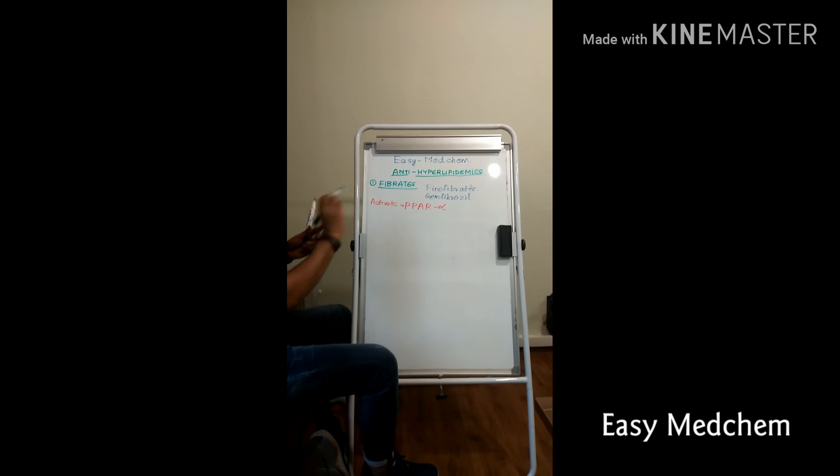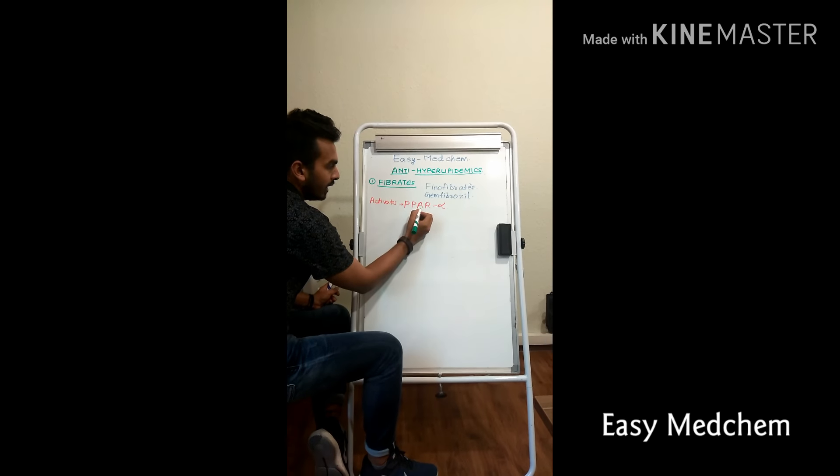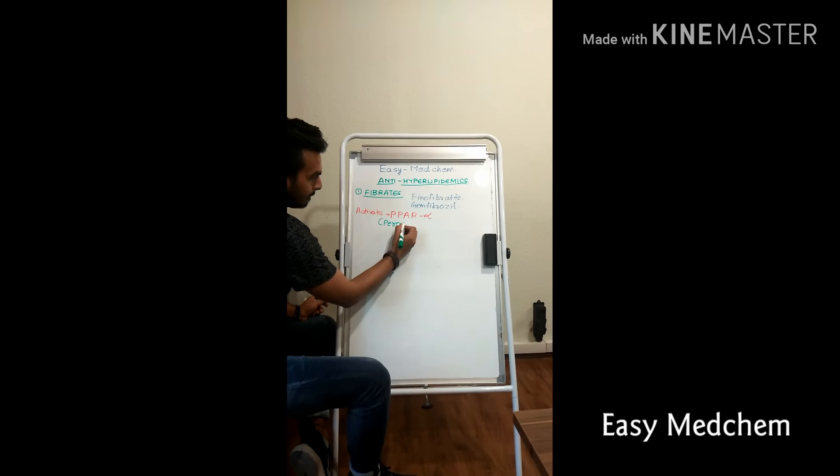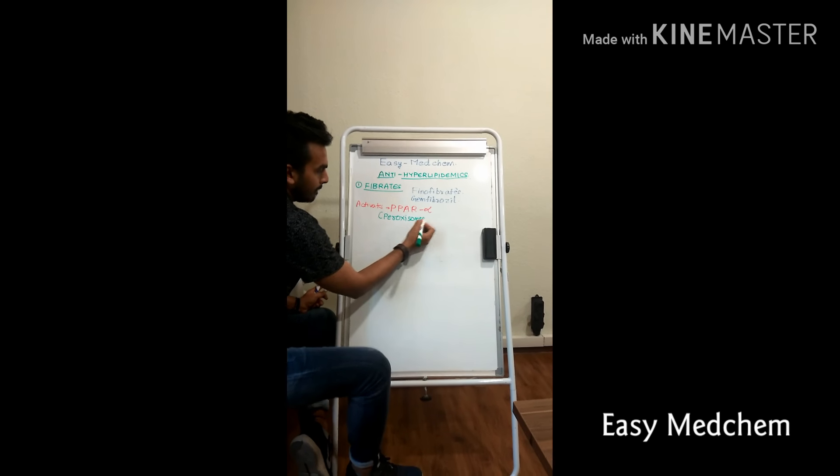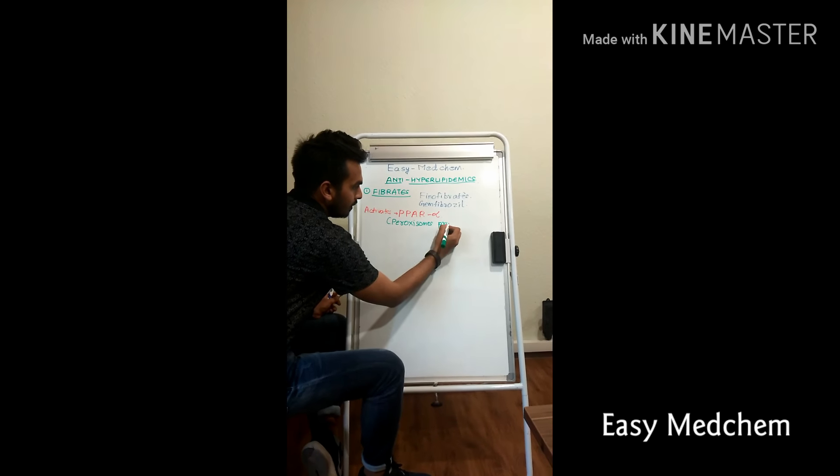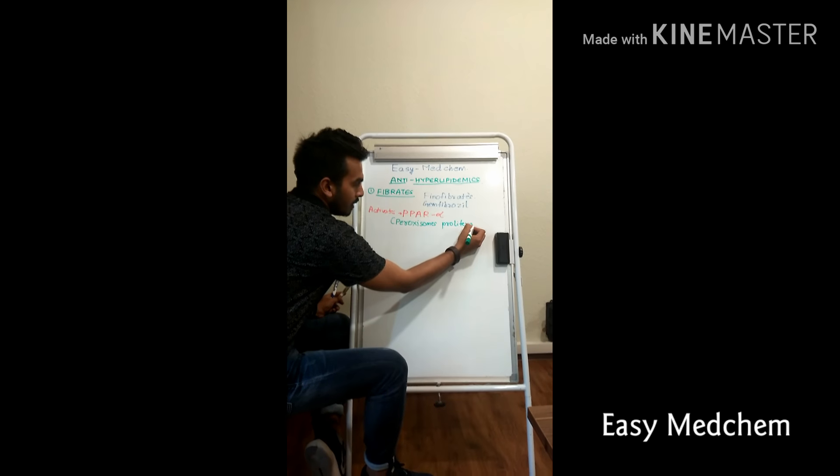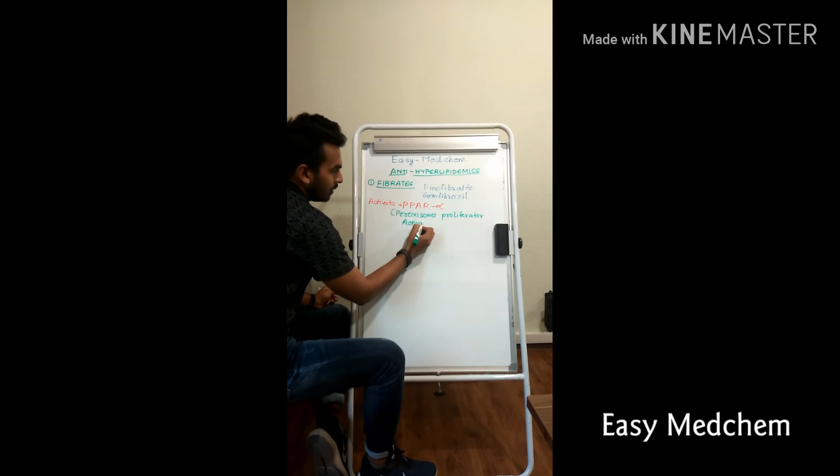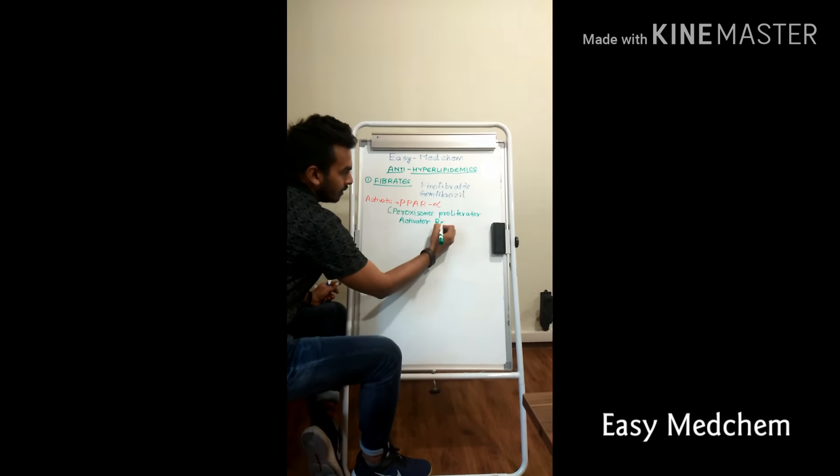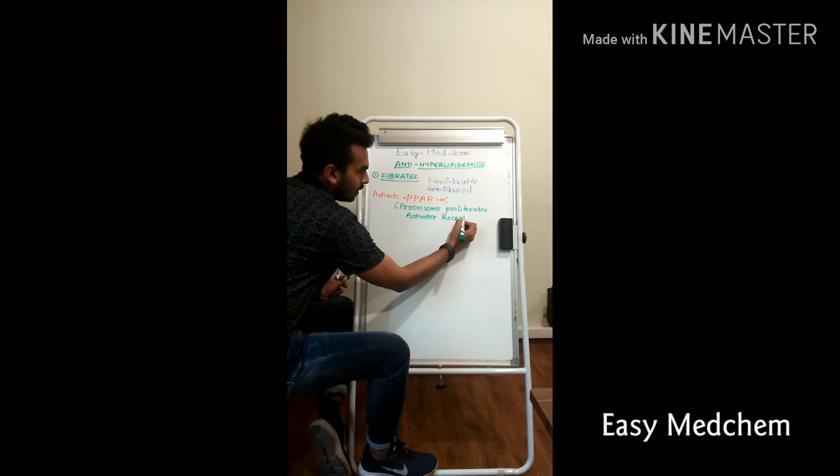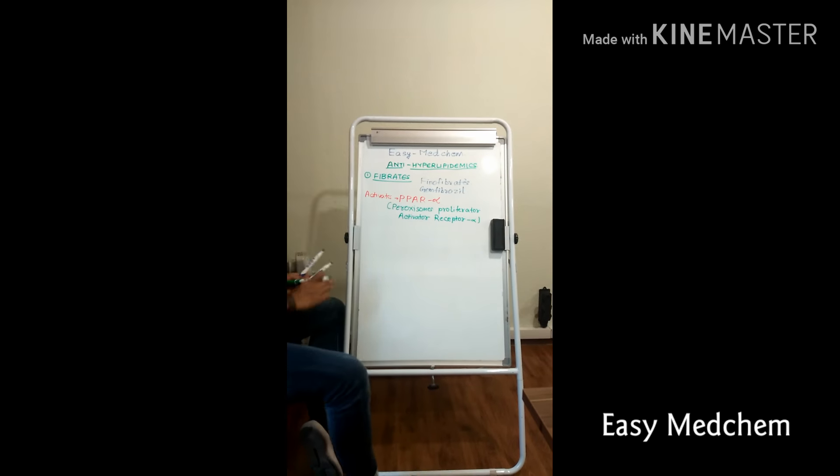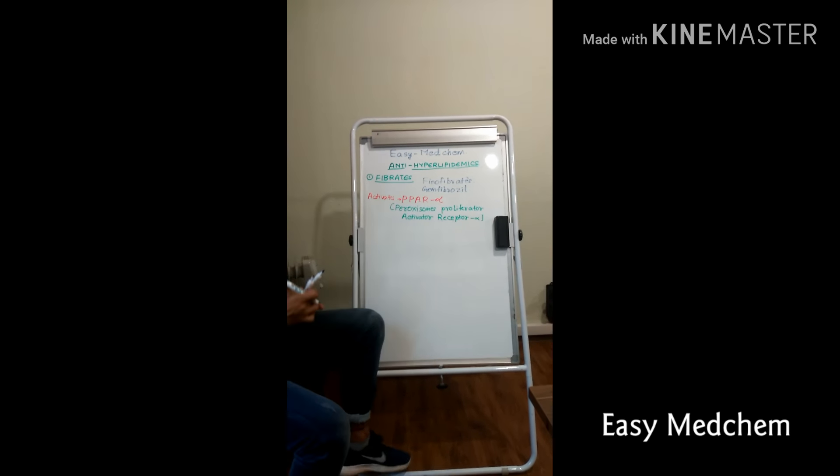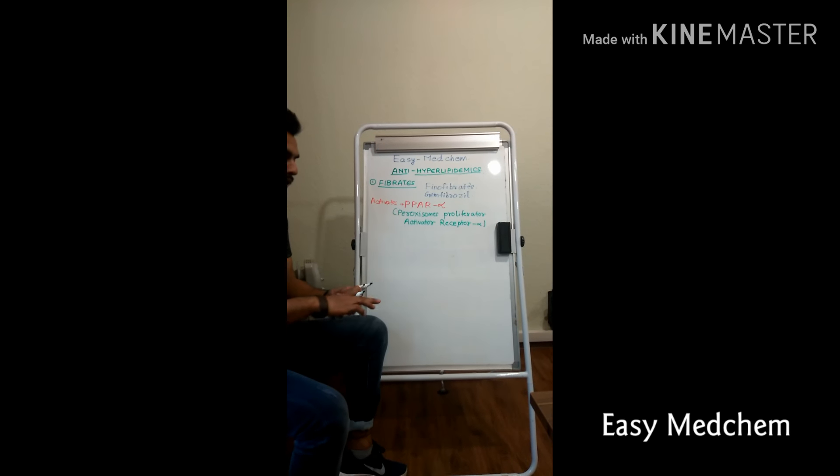This enzyme is peroxisome proliferator activator receptor alpha. These fibrates or these drugs will activate this enzyme PPAR alpha. And what is this PPAR alpha doing? It is doing three jobs.